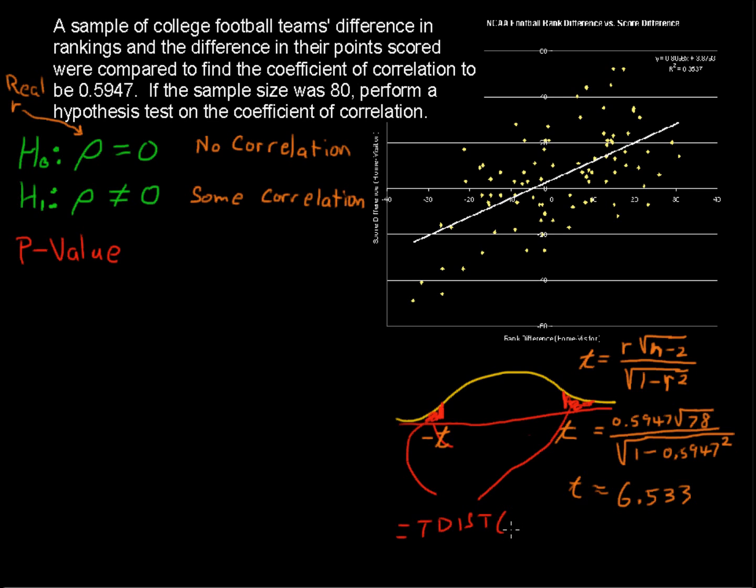So tdist, and then it's looking for a t-value, degrees of freedom, and then one or two tails. And we're going to put in 2 for the number of tails. By the way, since we're asking for degrees of freedom, this says n minus 2 degrees of freedom is what we're going to use. So 78 would be 80 minus 2.